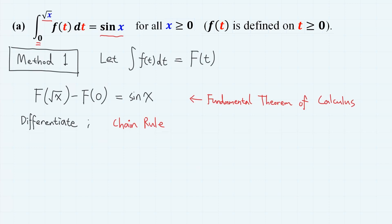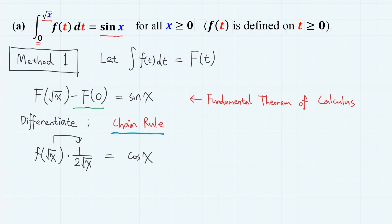Now we differentiate both sides with respect to x, and we have to use the chain rule. For the left-hand side, we have f(√x), and by the chain rule we multiply by the derivative of √x, which is 1 over 2√x. The F(0) term is just a constant, so it gives 0. On the right-hand side, we have cos(x).